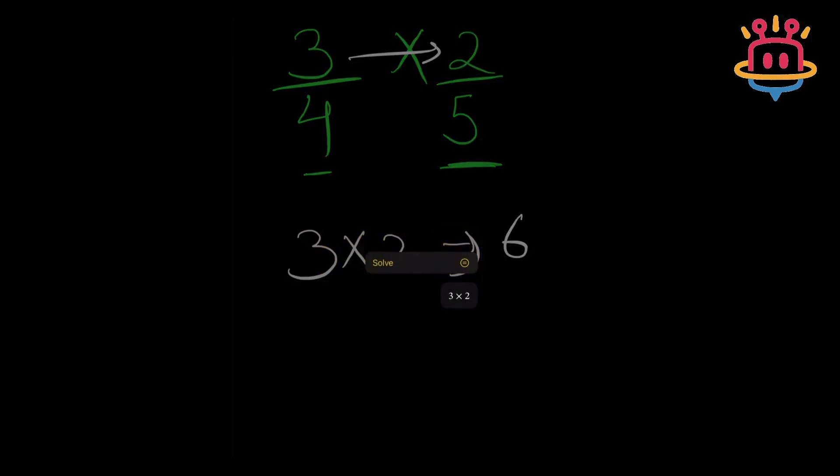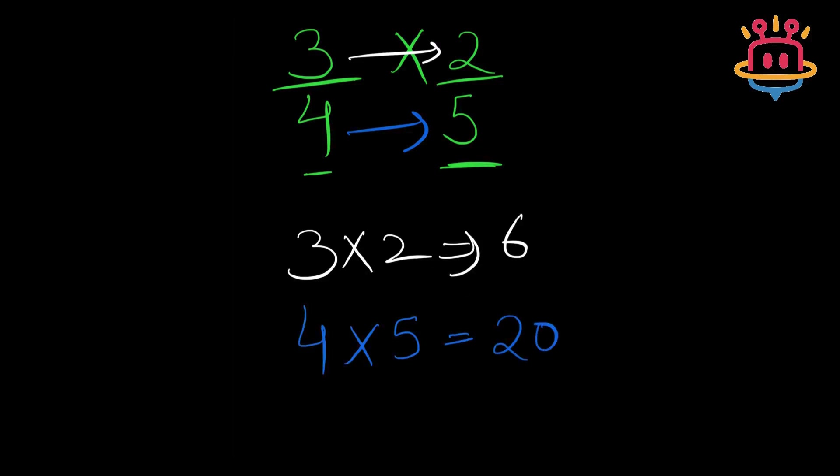Here in this question, right? And when I say multiply the bottoms, I mean multiply the denominators like 4 and 5 here to get the answer as 20.